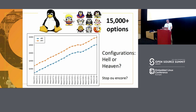What we observe is that there is an increasing number of options, and it does not stop. I've taken just two architectures — x86 and ARM — but the same trend applies to all architectures. We have gained something like 3,000 options between Linux 4 and Linux 5. It's kind of incredible — you have 15,000 options that you can combine. That's why Linux is so popular: you can combine all these options to fit your requirements.